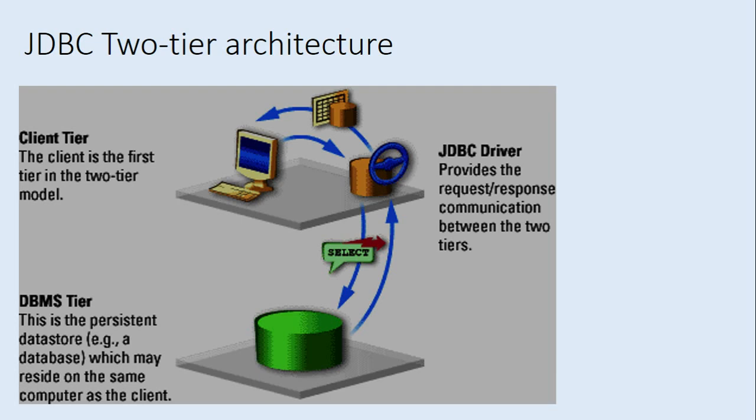The client tier has two components: the client and the JDBC driver. The client is the first tier in the two-tier model, connected to the JDBC driver and the database tier, which is a persistent data store — a permanent data store that may reside on the same machine or a different machine. When the database tier resides on a different machine, this architecture can be termed a client-server configuration.